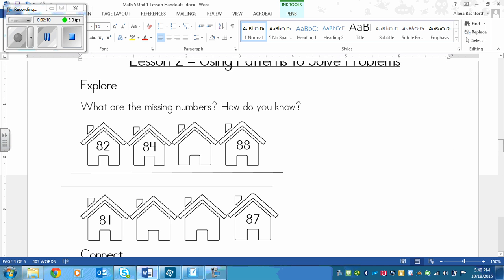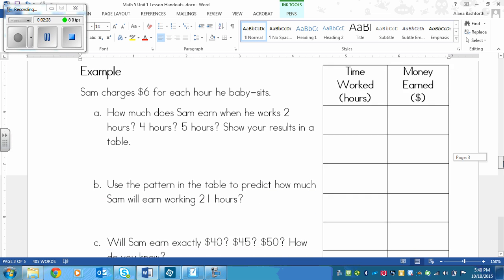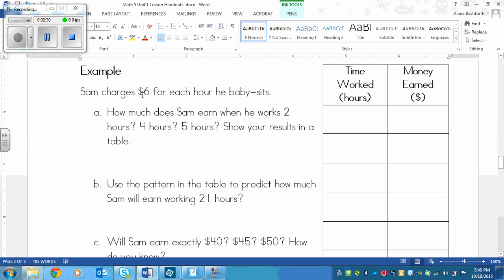Now if we look at the connect, it says one way to help solve problems when there are no pictures drawn for you, like in the explore question, is to draw a table to help you organize the information you have been given. Here's our example. It says Sam charges $6 for each hour he babysits.